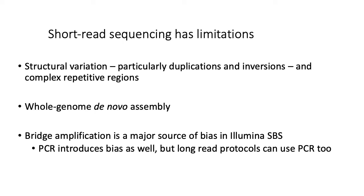Another thing I want to briefly mention is the issue of sequencing bias. When we talked about Illumina SBS technology, I mentioned that both bridge amplification and PCR amplification introduce bias into the sequences that you generate. PCR can also be used in long read protocols, but bridge amplification is specific to Illumina technology. By switching to long read sequencing, you can at least eliminate bridge amplification as a source of bias.